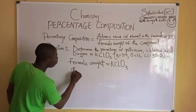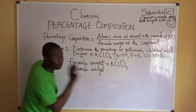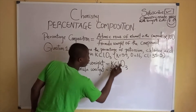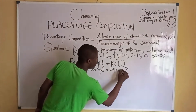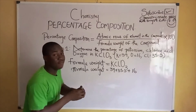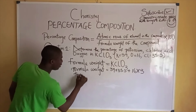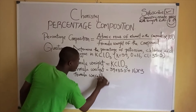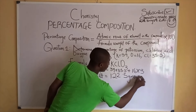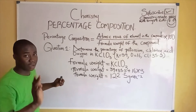So the formula weight becomes: the atomic mass of potassium is 39, plus the atomic mass of chlorine is 35.5, plus the atomic mass of oxygen is 16. Since we have three atoms of oxygen, it becomes 16 times 3. Making the formula weight of the compound KClO₃ equal to 122.5 grams per mole. This is the formula weight of KClO₃: 122.5 grams per mole.